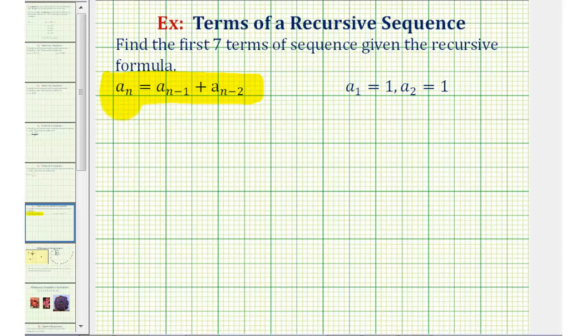Since a sub n is based upon previous terms, when given a recursive formula, we're also given a sub one and a sub two, or the first two terms in the sequence.